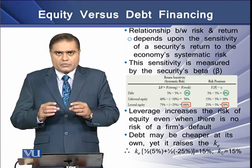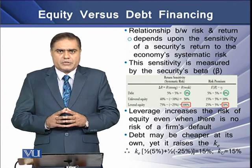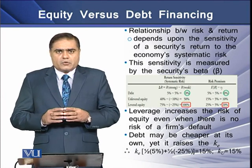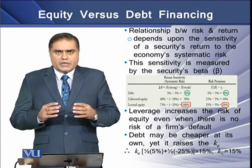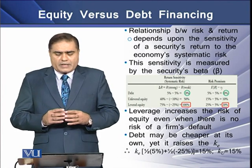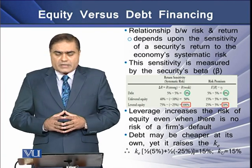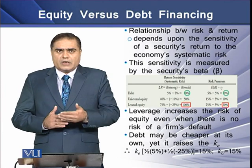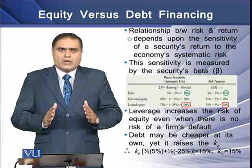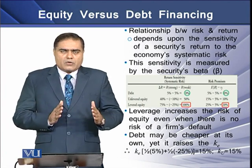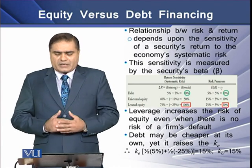If we determine the equity cost of capital for the firm in this particular case, and we assume that strong economy and weaker economy both have equal likelihood, then the expected cost of equity comes to 15%. That 15% is equal to the unlevered company's cost of overall capital that we had seen in our earlier lesson.